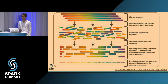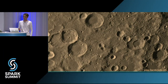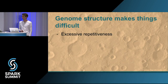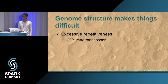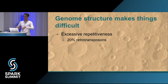Everything from the middle of this slide onwards is essentially totally computational. The top half involves complicated sequencing chemistry, then we deploy a variety of algorithms and tools to reassemble the genome and identify variants. This process is complicated because the genome is a mess — there's excessive repetitiveness. About 20% of the human genome is retrotransposons, which are parasitic regions of DNA. When the cell opens the double helix, these encode a small machine that goes and inserts a copy of that source code somewhere else in the genome.